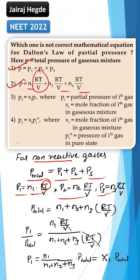If I take RT by V common, then it will become n1 plus n2 plus n3 into RT by V. If I do P1 by P total, n1 divided by n1 plus n2 plus n3 into RT by V, RT by V gets cancelled.